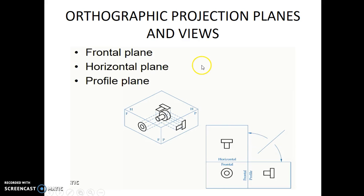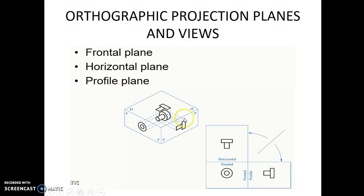Now coming to the planes on which the projections are taken, the horizontal plane over which the top view is taken is named H. The plane named F is the frontal plane, and the plane named P is the profile plane. The three planes are seen here one with respect to the other.